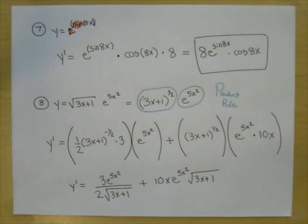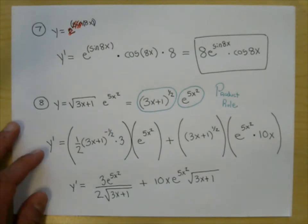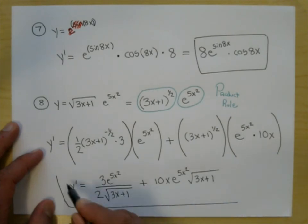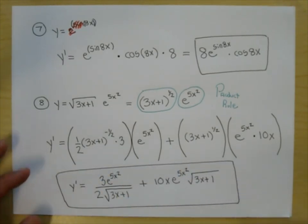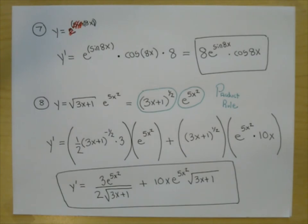Cleaning up: y prime equals 3e to the 5x squared over 2 times the square root of 3x plus 1, plus 10x e to the 5x squared times the square root of 3x plus 1. We're not going to get a common denominator. That is problem 8: chain rule within the product rule.